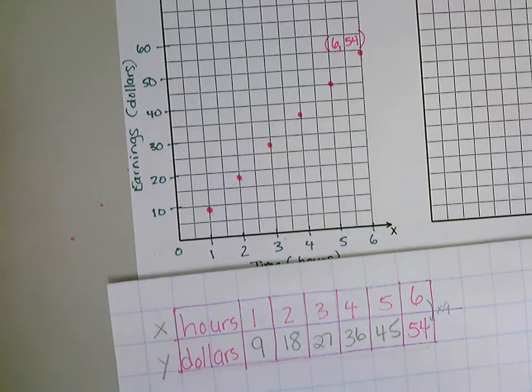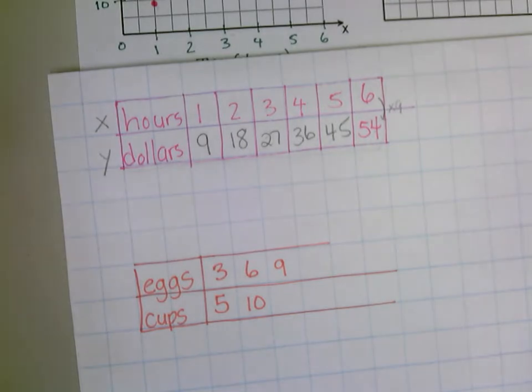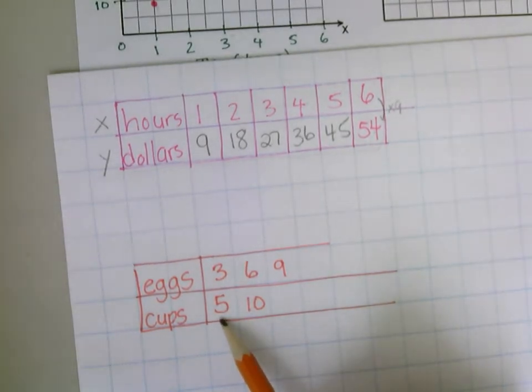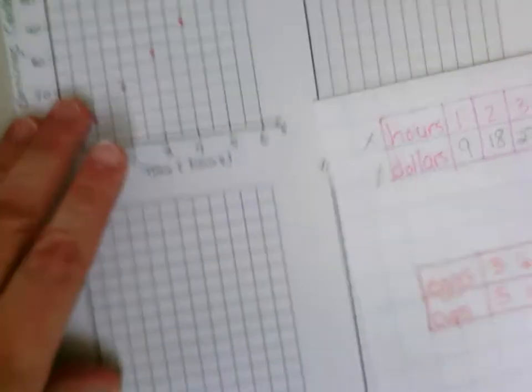We can use our coordinates—this would be our x-coordinate, this would be our y-coordinate. Let's take a look at another one. There's another ratio table for a recipe. For every three eggs you need five cups of flour. Let's plot this onto our coordinate plane to see the relationship between eggs and cups.